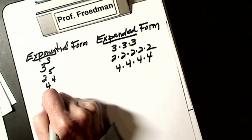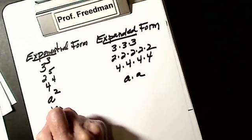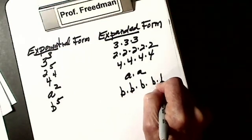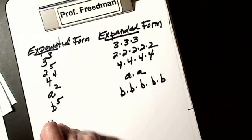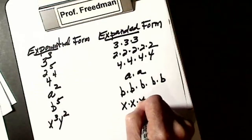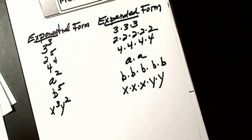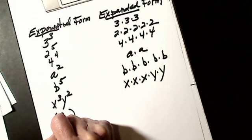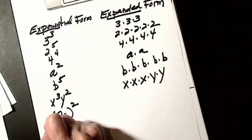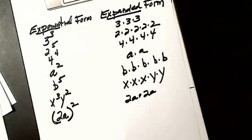Now I just have to put letters in. a squared means a × a. b to the fifth power means b times itself 5 times. If I have two letters, like x to the third times y squared, that means x × x × x times y × y. The only thing to be careful of is parentheses: (2a) squared means 2a is stuck together, so it means 2a times itself, 2 times.